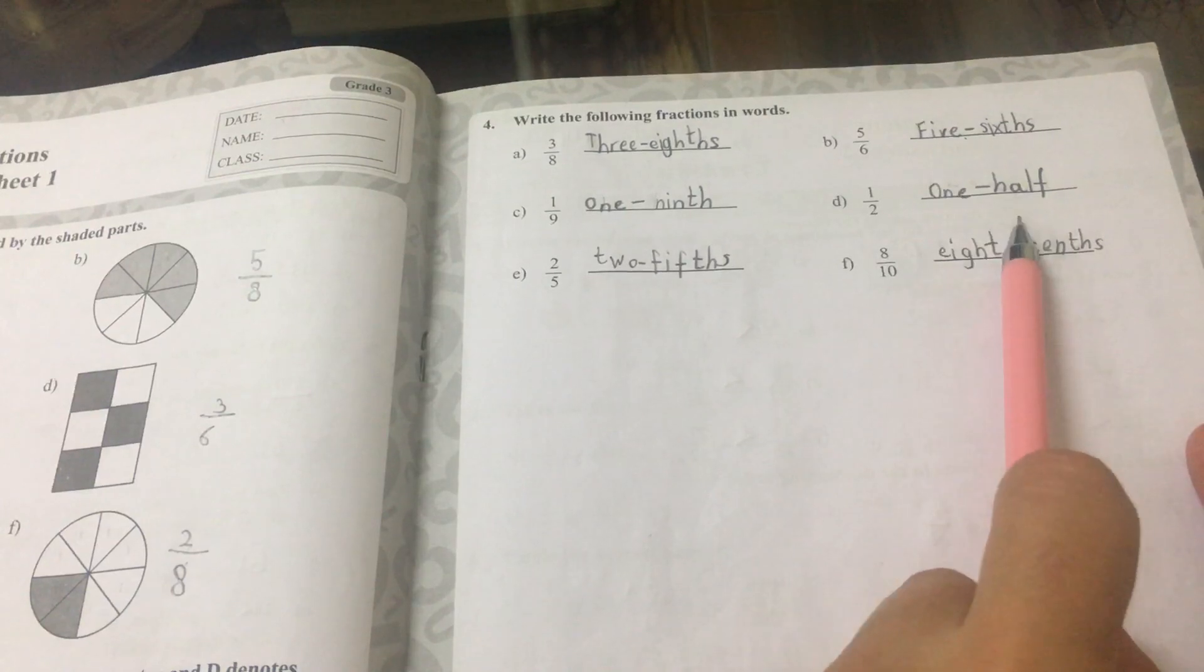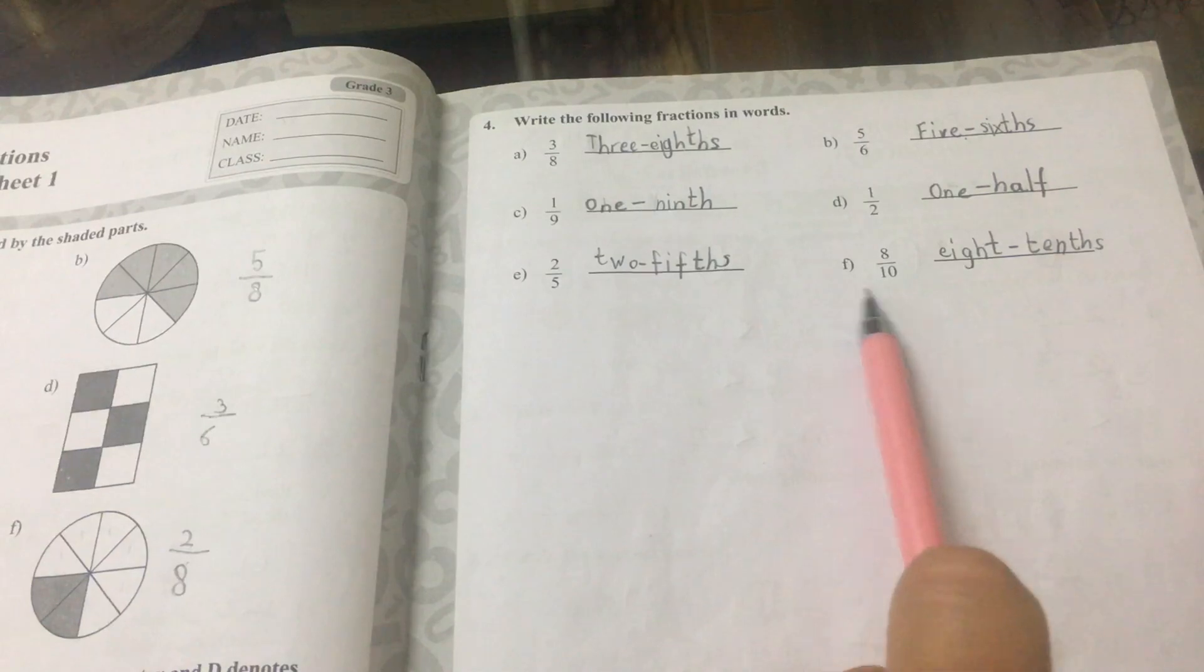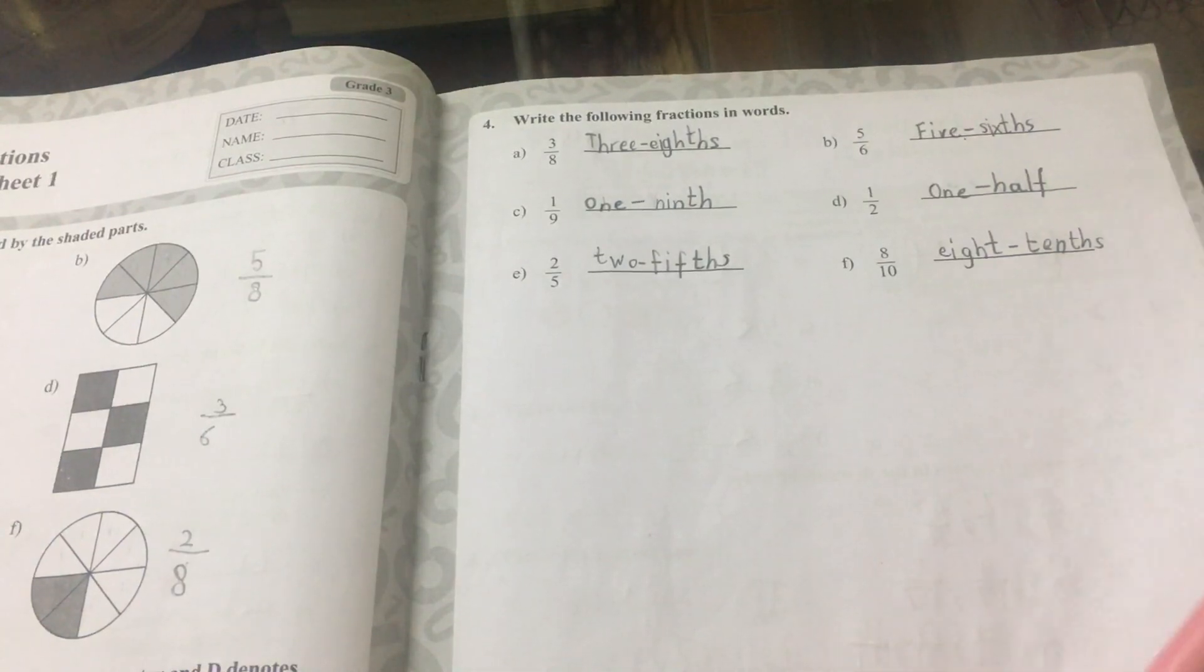D is 1 half, E is 2 fifths, and F is 8 tenths.